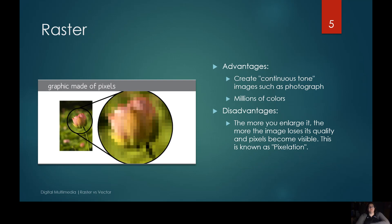What are the advantages of using a raster? Using a raster image you can create continuous tone images such as photographs, and you also have millions of colors to choose from, so you're going to get a clearer, smooth line. The disadvantage is the more you enlarge it, the more the image loses its quality and the pixels become more visible — this is called pixelation.